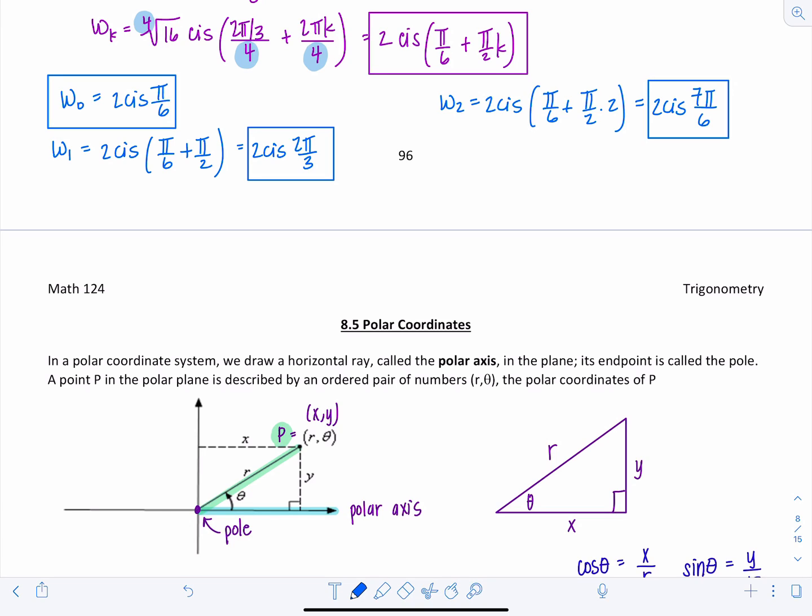And then last one, w sub 3 is 2 cis pi over 6 plus 3 pi over 2. 3 pi over 2 is 9 pi over 6, plus pi over 6 is 10 pi over 6. So that's going to be 2 cis 5 pi over 3.